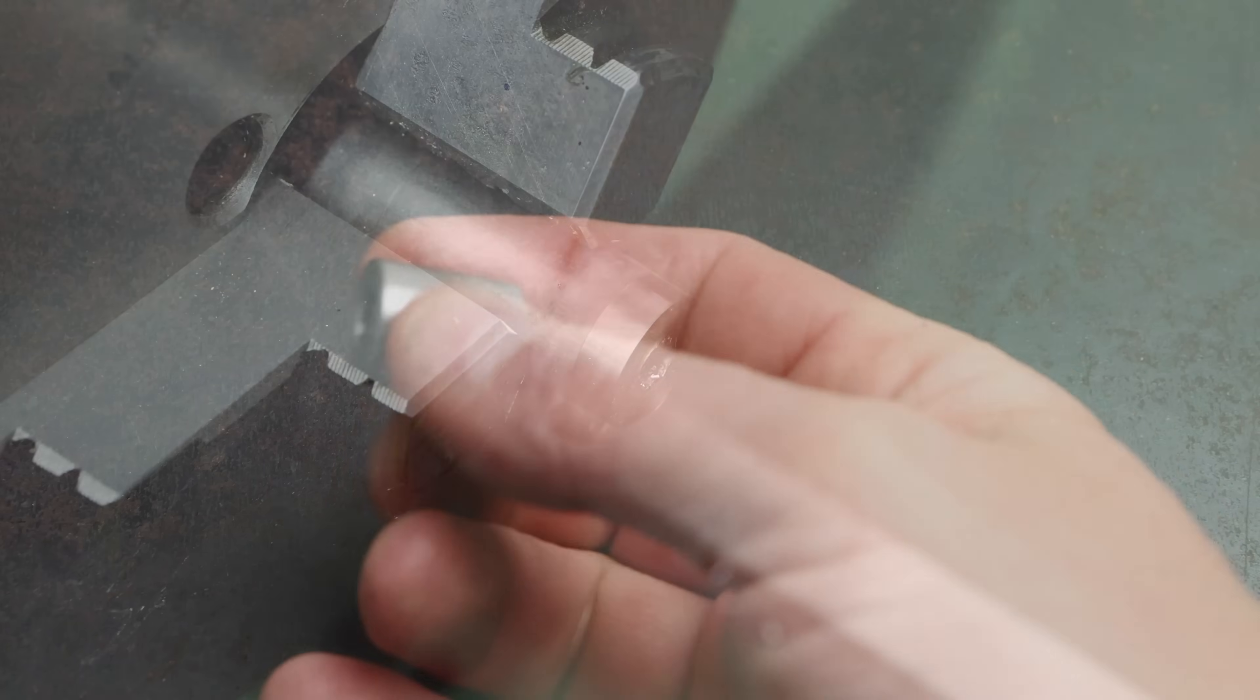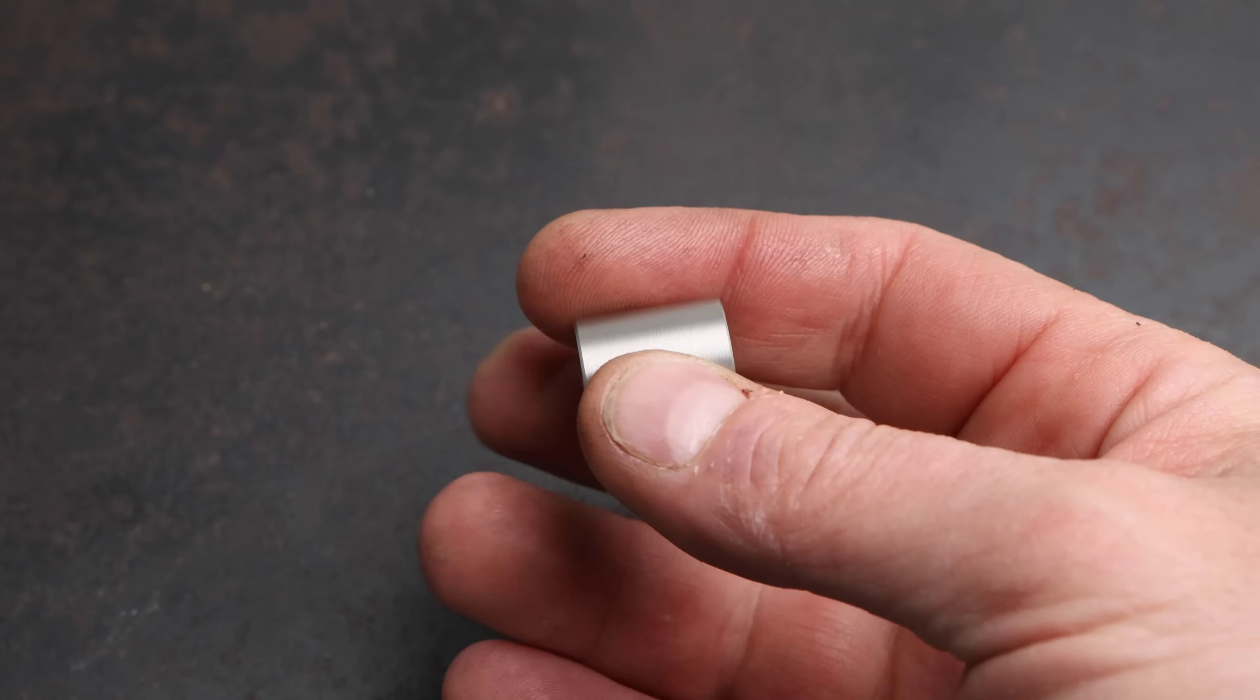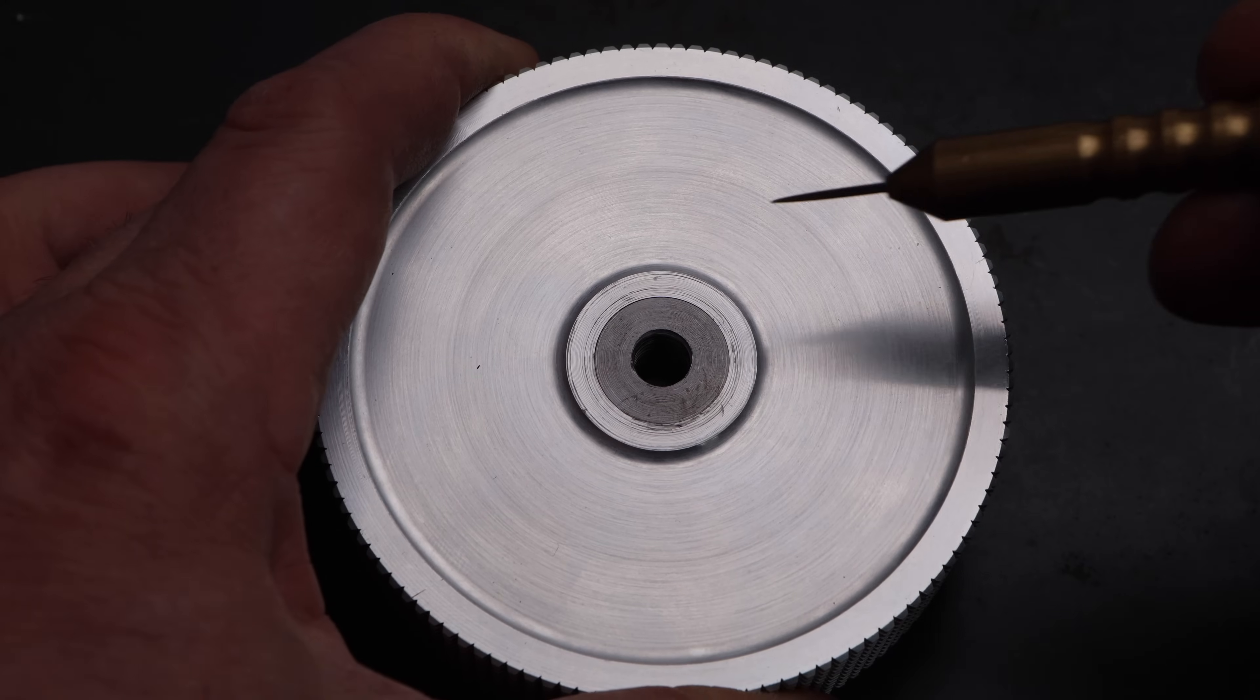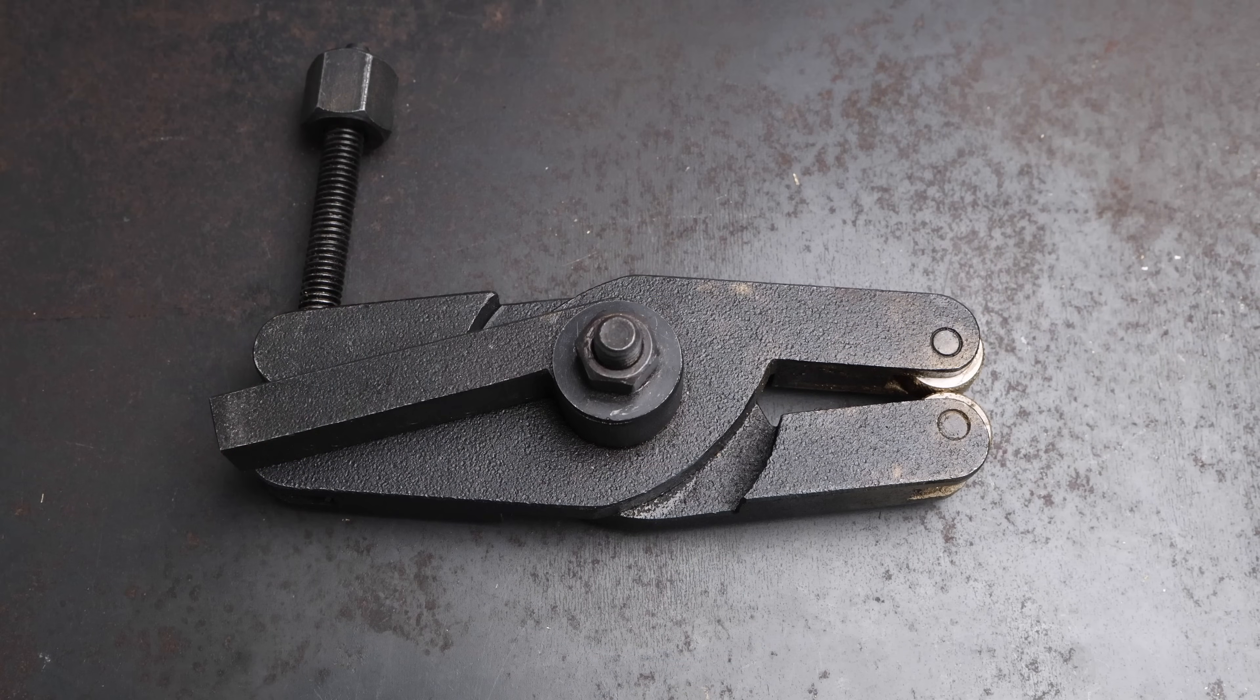And it was at about this point in the editing process of this video that I realized I'd pulled a classic Jonesy and accidentally deleted all of the footage of me boring the hole and fitting this nut. But we can see the nut fitted in the finished item. Anyway let's talk about something more interesting, i.e. knurling.